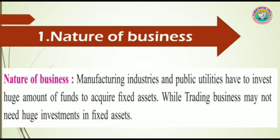Manufacturing industries and public utilities have to invest a huge amount of funds to acquire fixed assets, while trading businesses may not need huge investments in fixed assets. For manufacturing industries, fixed capital requirement is more because they have to buy plant and machineries. While in trading businesses — which are engaged in buying and selling of goods — there is no manufacturing, so there is no need to purchase big plants and machineries.